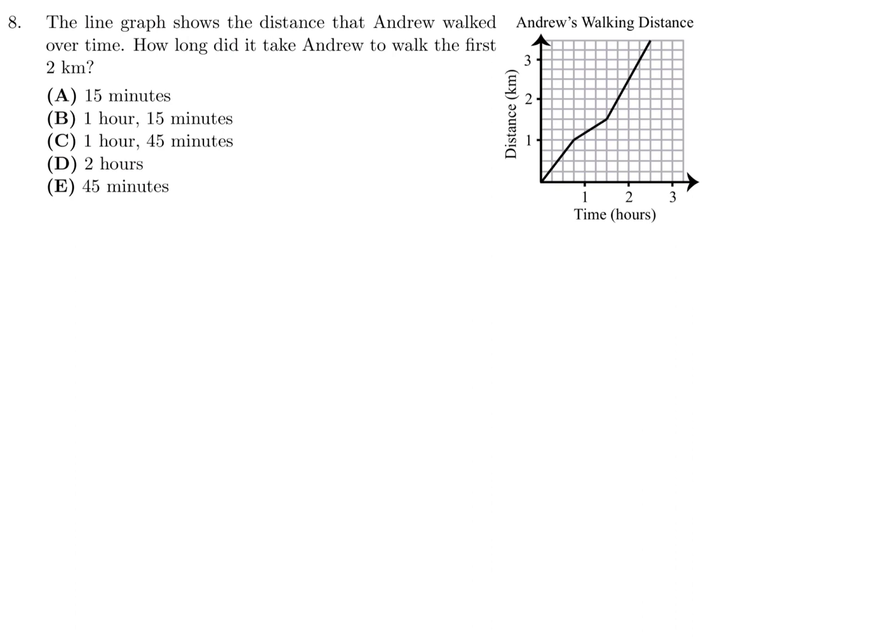The line graph shows the distance that Andrew walked over time. How long did it take Andrew to walk the first 2 kilometers? Well, the 2 kilometers is here. So I've got to go across and then see what it shows me on the bottom. And it matches right there. So that looks like 1 and 3 quarters. So that would be 1 hour and 45 minutes. So that is C for number 8.